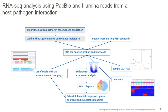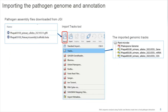First, I will import the references and combine them into one synthetic reference. Combining these genomes into one synthetic reference allows us to analyze the expression in both organisms at once. This way we avoid having to run RNA-Seq expression analysis twice, and we also avoid having to separate the plant and pathogen reads in the NGS data.